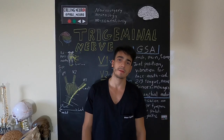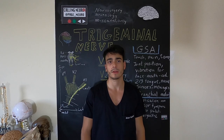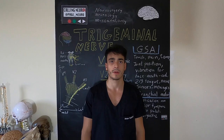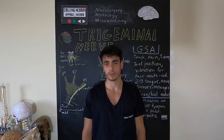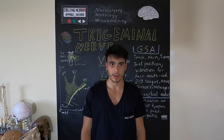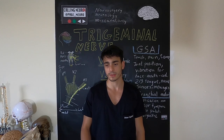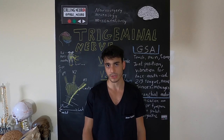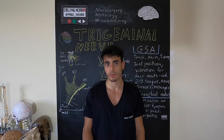The trigeminal nerve is known as the fifth cranial nerve, and it's an important nerve for cranium, skull, head and face sensation, and also a motor nerve for the muscles of mastication and other muscles that I will present later.